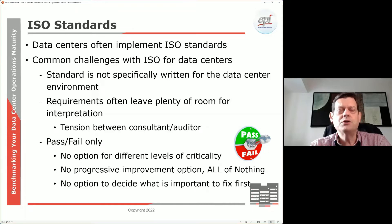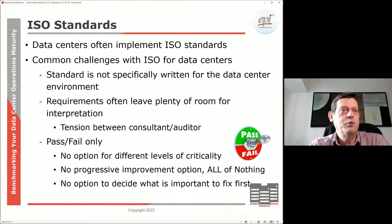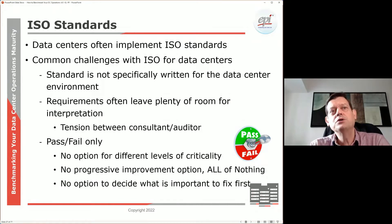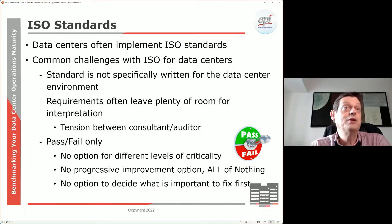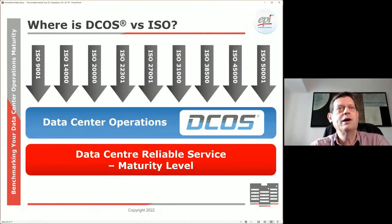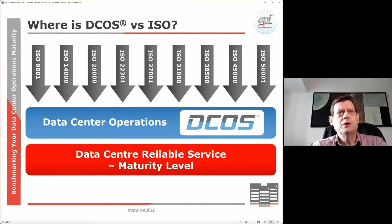This all-or-nothing type of standard means you as a business cannot decide what your priorities are. You cannot say 'this is more important than the other and this is where I want to put my resources,' because the ISO standard doesn't leave you that choice. You essentially do everything from page one to the last page.